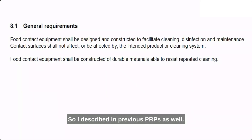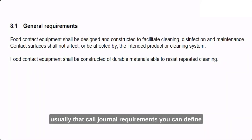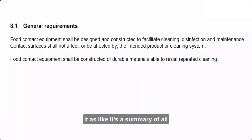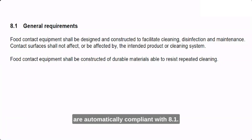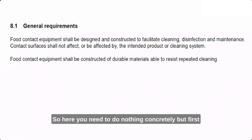The first sub-clause, 8.1, is General Requirements. As I described in previous PRPs, 8.1 is essentially a summary of all the other clauses that follow. If you comply with requirements like 8.2, 8.3, 8.4, and so on, then you are automatically compliant with 8.1. So concretely, you need to do nothing extra for 8.1 — we will discuss the others first and then come back to it.